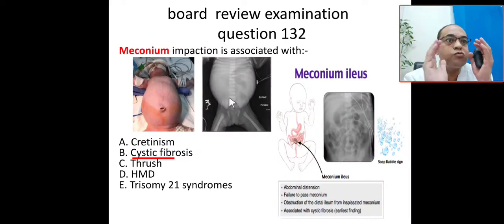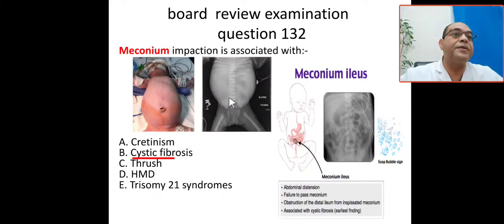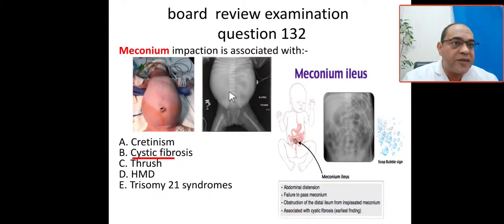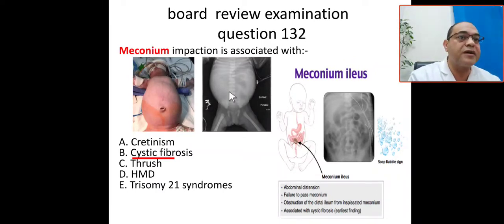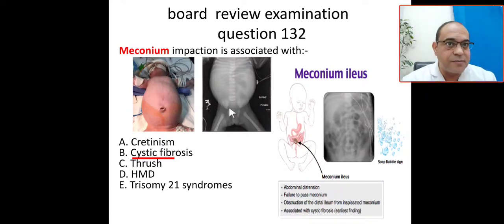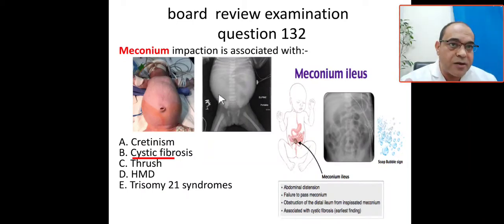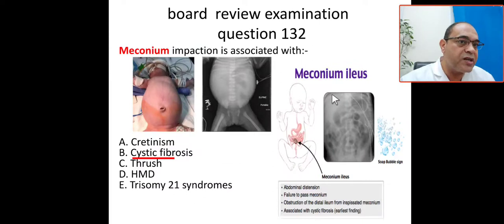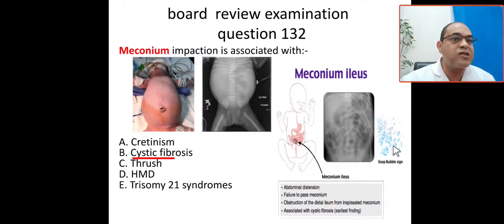On X-ray, the small bowel is located in the center while the large bowel is in the periphery. In the center, there is paucity of bowel gases — meaning absent bowel gas. The rectum also shows absent or lack of rectal gas. The classic sign is called the soap bubble appearance in the lower abdomen. You can see the soap bubble appearance clearly here on the X-ray.